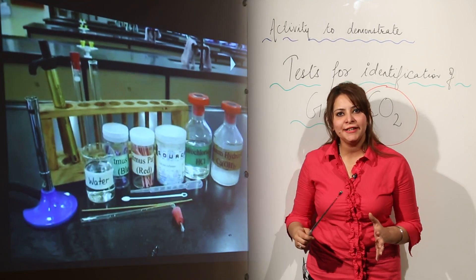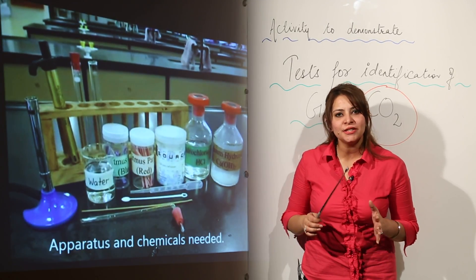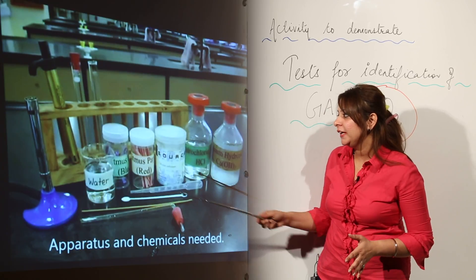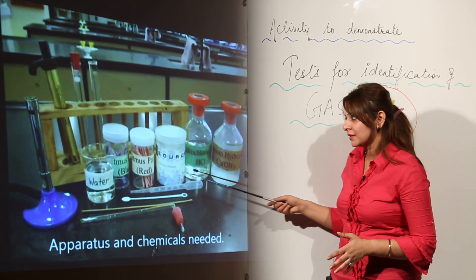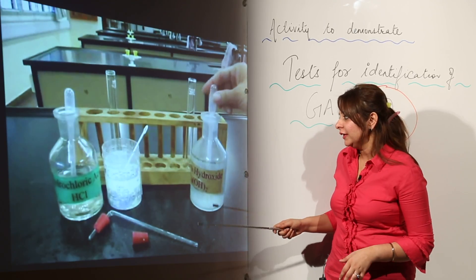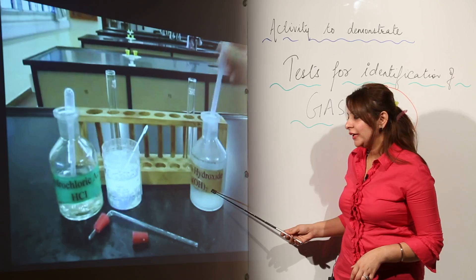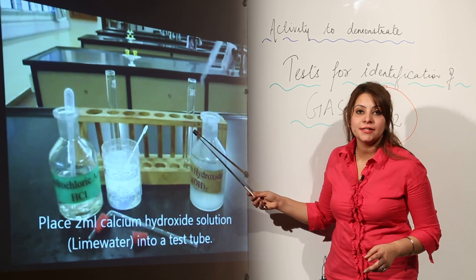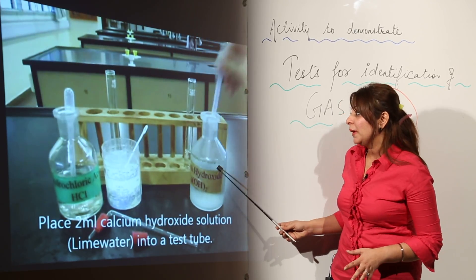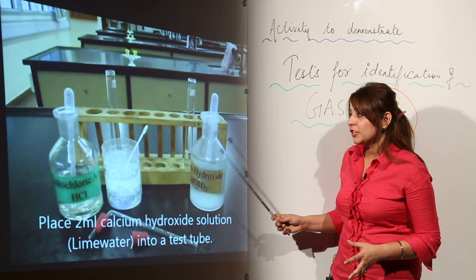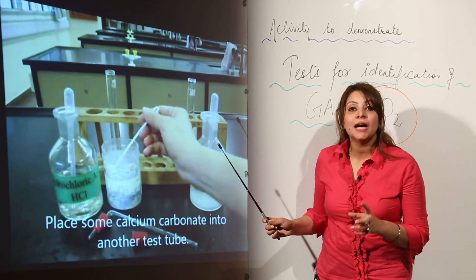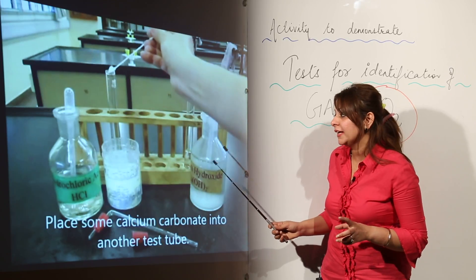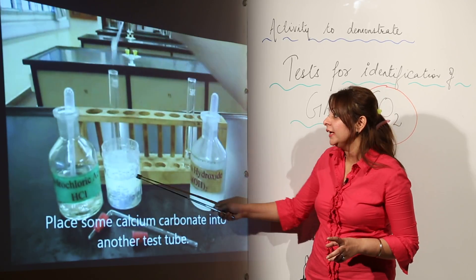We are going to study the identification test for the gas carbon dioxide. For this we'll be needing all this. What we have here first is calcium hydroxide — that is the slaked lime — which we are pouring into a test tube. To show the reaction, we first need carbon dioxide, so we are in immediate need of it.